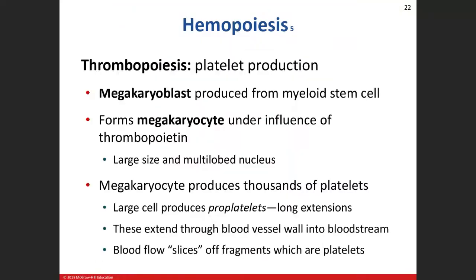To recap: platelets are created from the overall large cell called the megakaryocyte. The extensions from the megakaryocyte get stuck in the bloodstream — it's like pouring a Coke into a stream and the current washes the bits and pieces downstream. The blood flow breaks off small fragments from the cell, and those fragments are our platelets.